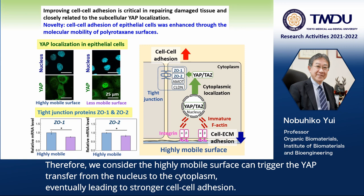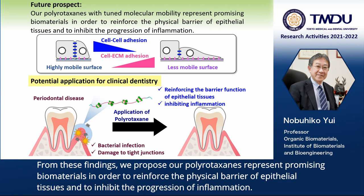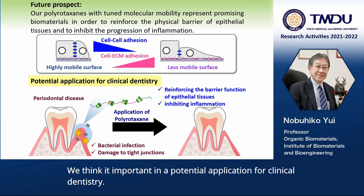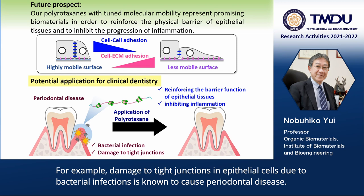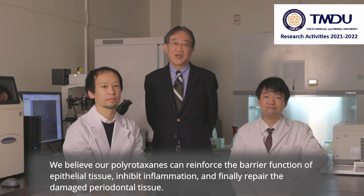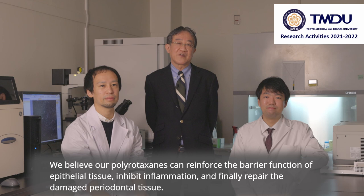eventually leading to stronger cell-cell adhesion. From these findings, we propose our polyrotaxanes represent promising biomaterials in order to reinforce the physical barrier of epithelial tissues and to inhibit progression of inflammation. We think this is important as a potential application for clinical dentistry. For example, damage to tight junctions in epithelial cells due to bacterial infections is known to cause periodontal disease. We believe polyrotaxane can reinforce various functions of epithelial tissue, inhibit inflammation, and finally repair damaged periodontal tissue. Thank you.